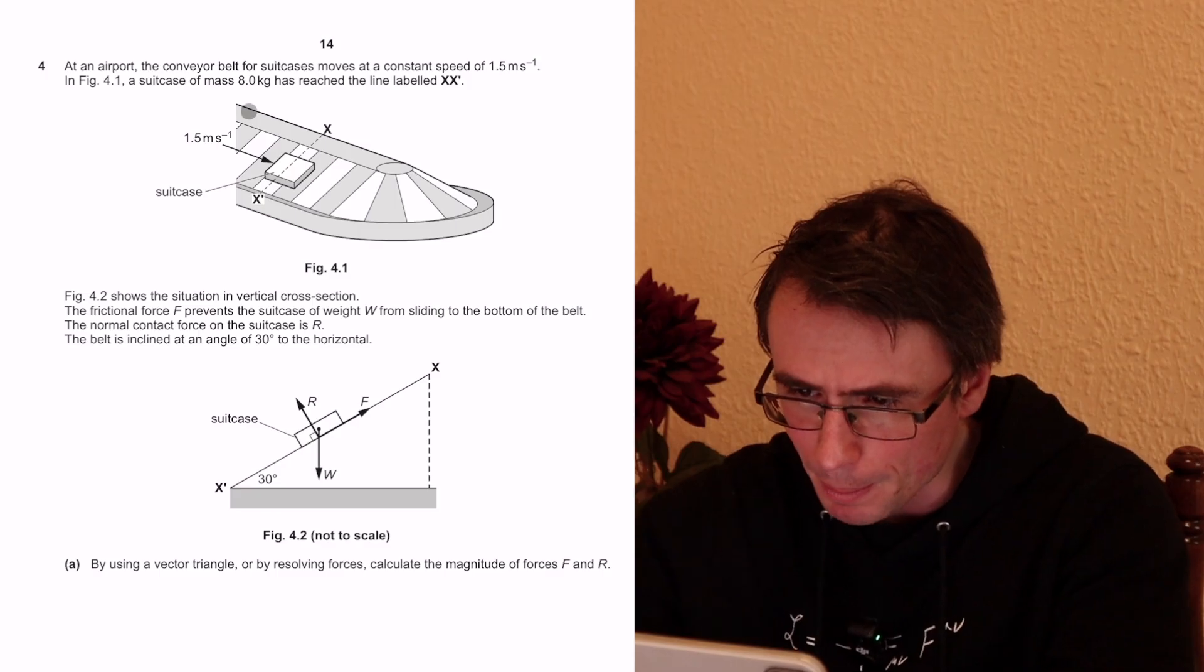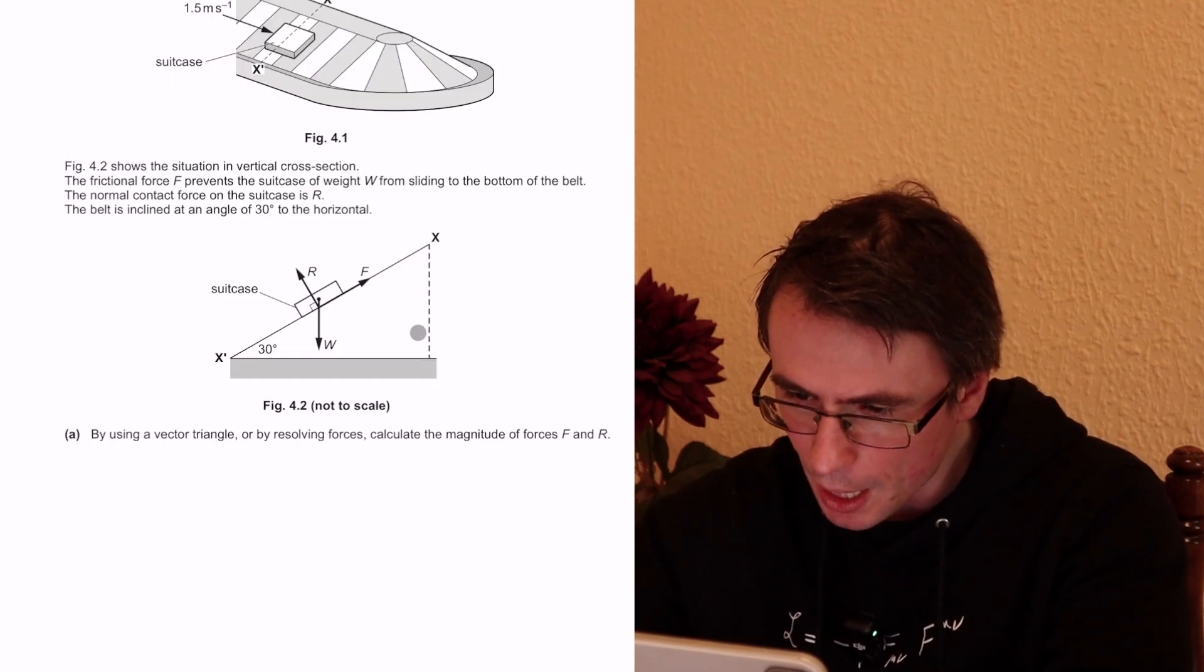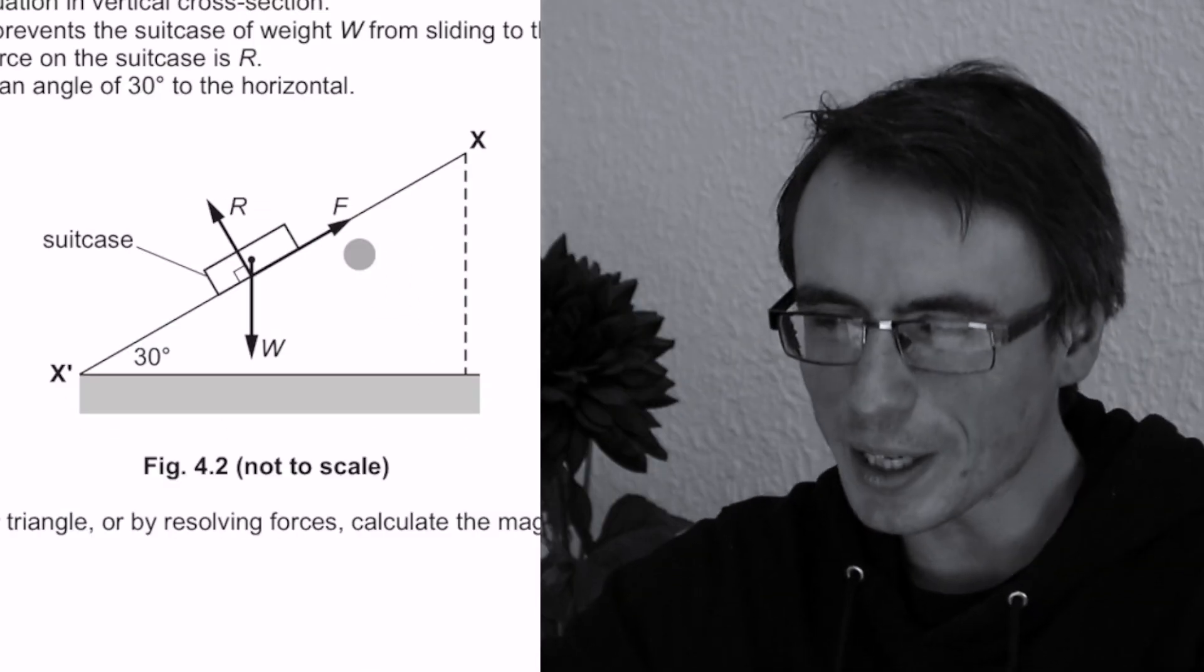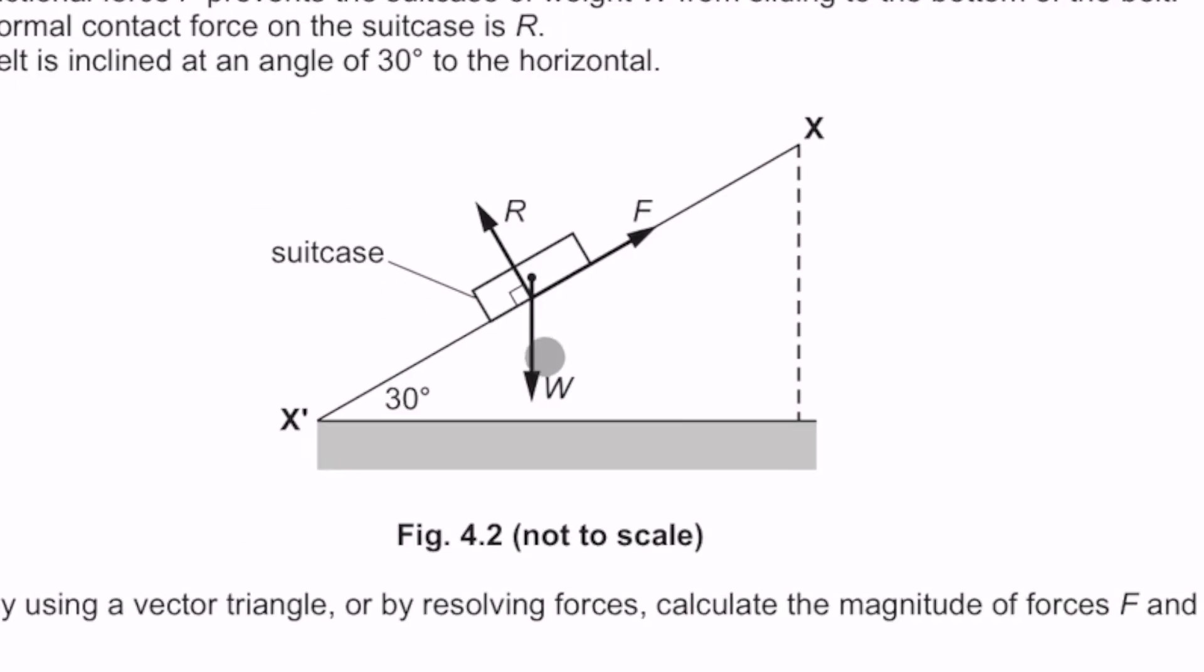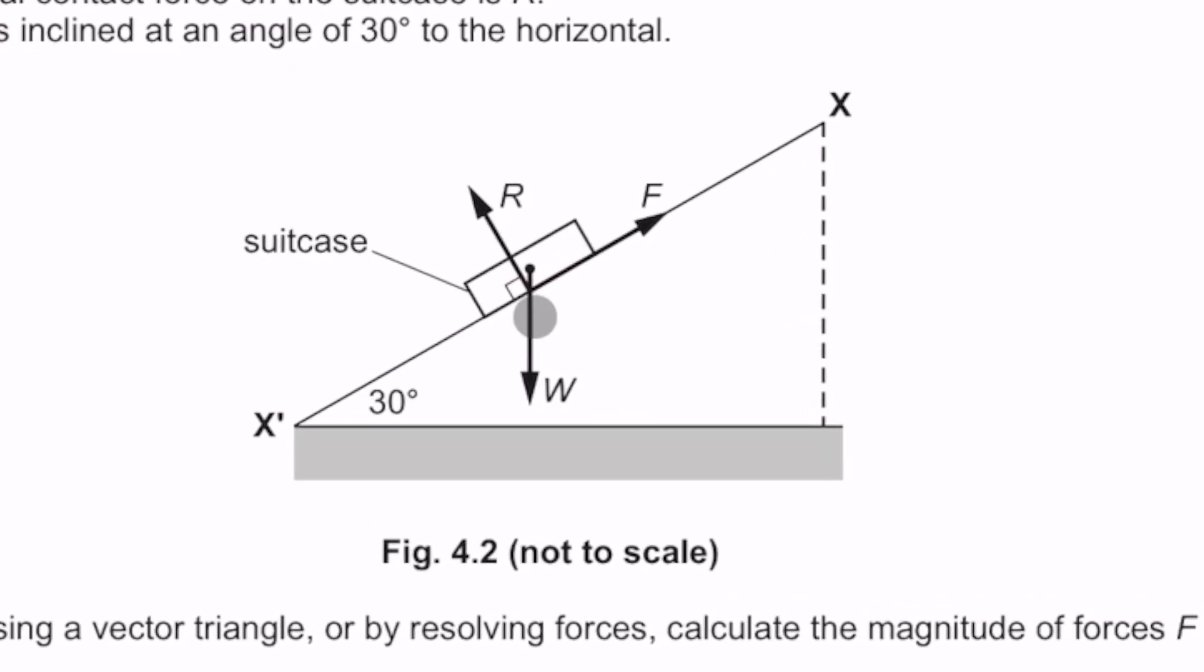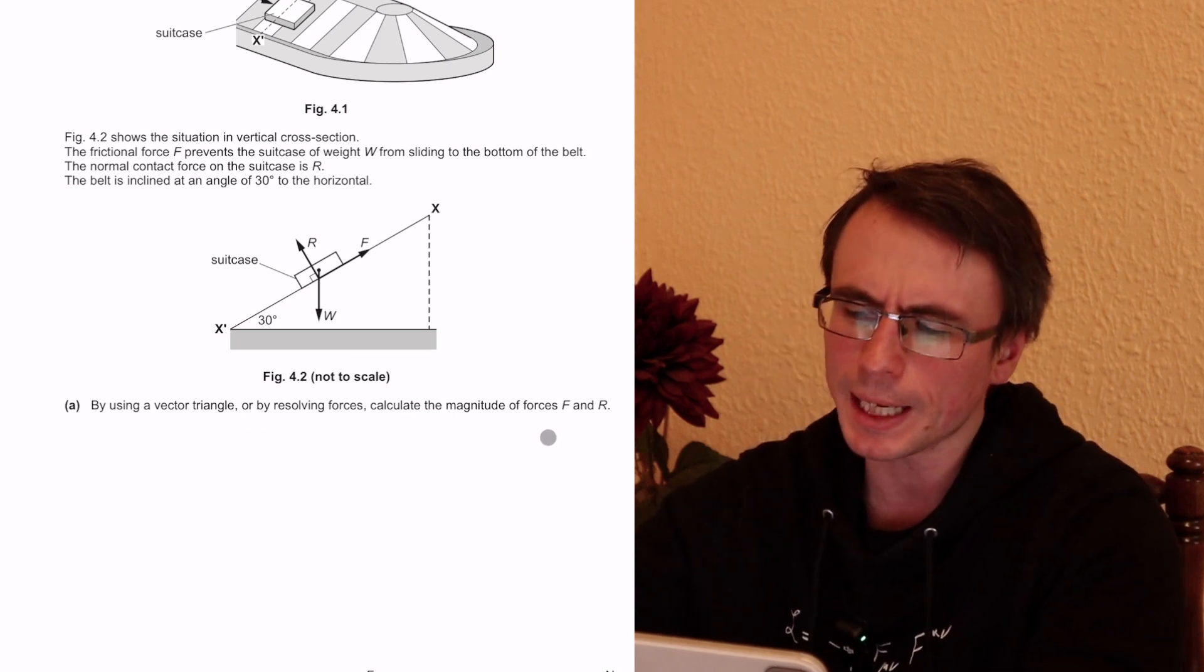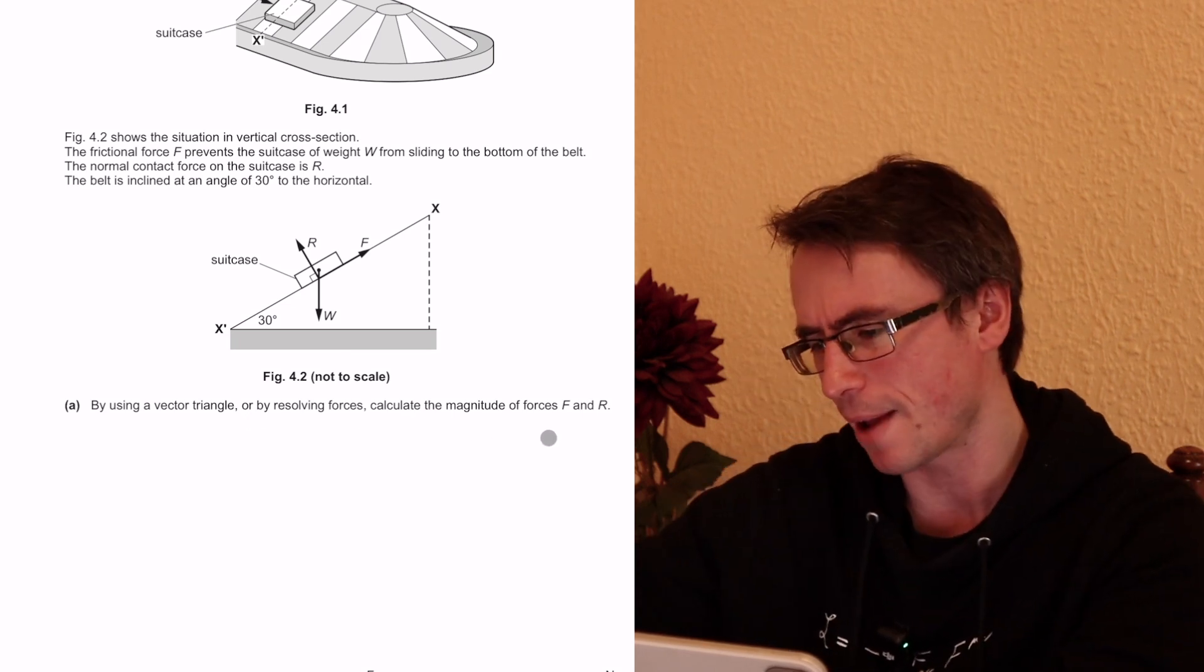Okay, we're given some masses and we have some diagrams over here. Don't you find it a little bit annoying when in a free body diagram all the forces don't seem to act at exactly the same point? Anyways, by using a vector triangle or by resolving forces, calculate the magnitude of the forces F and R.